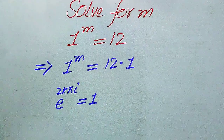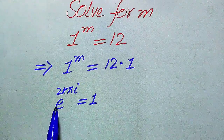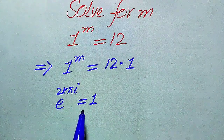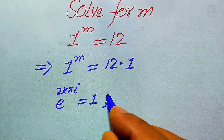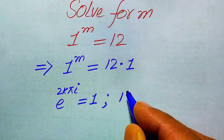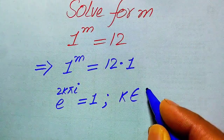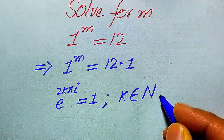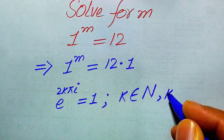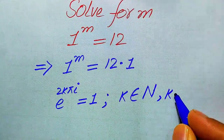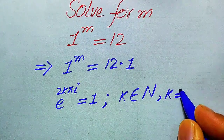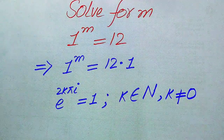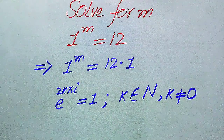In the next step we use Euler's identity. Euler's identity states that e to the power of 2k·π·i equals to 1, where k should belong to the natural numbers, with the condition that k must not equal to 0.